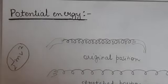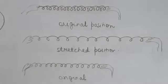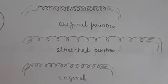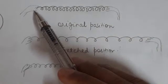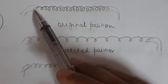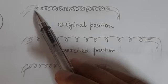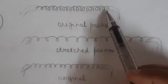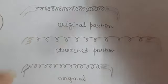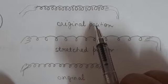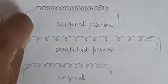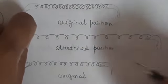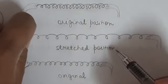Let us take an example to understand the concept of potential energy. You might have seen a spring. Let us take that same spring example. You take a spring and hold it from one end — this one end is fixed. Now, when you hold it from both ends, this is the original position; it is at rest. The one end is fixed and you are stretching from the other end. This is a stretched position — this distance will increase.